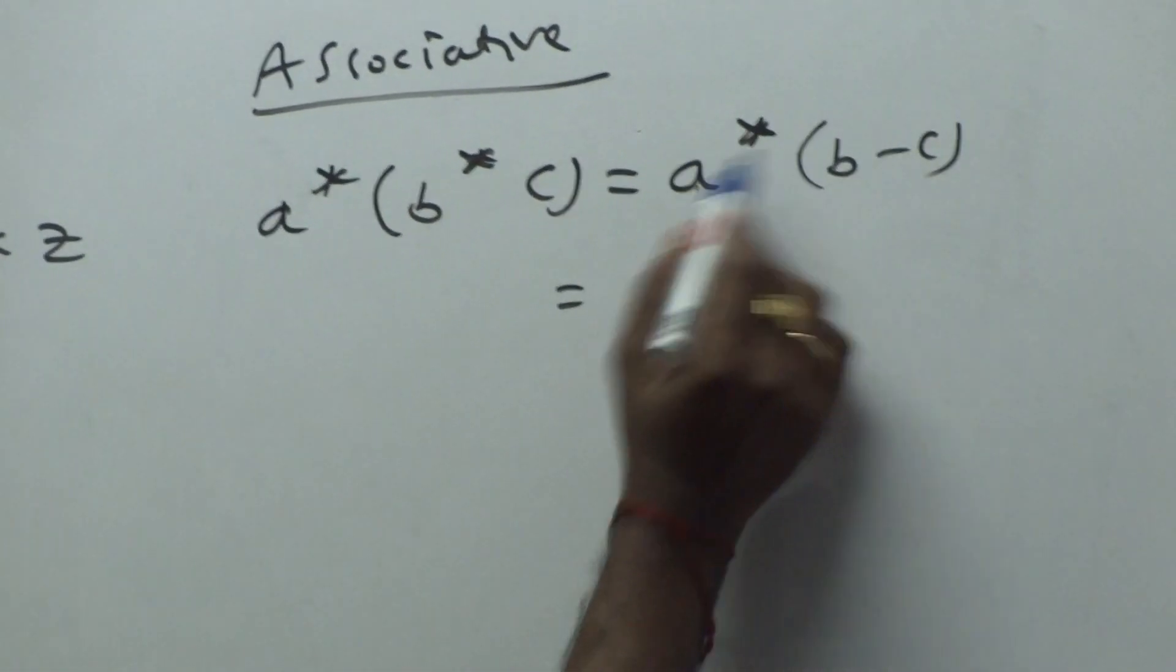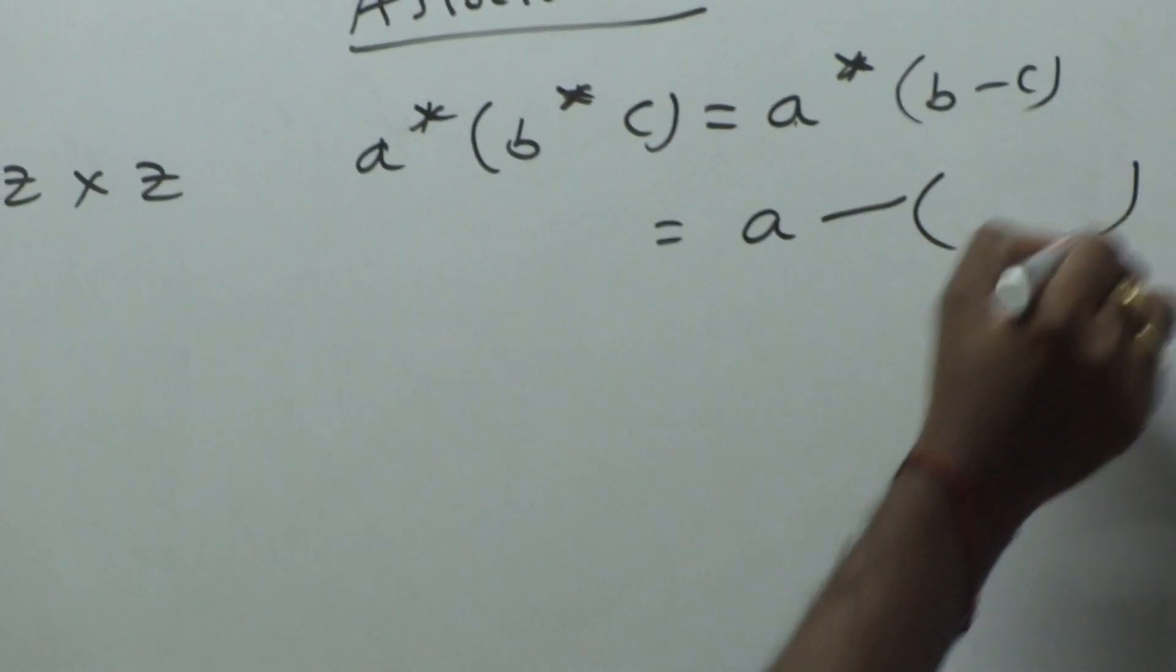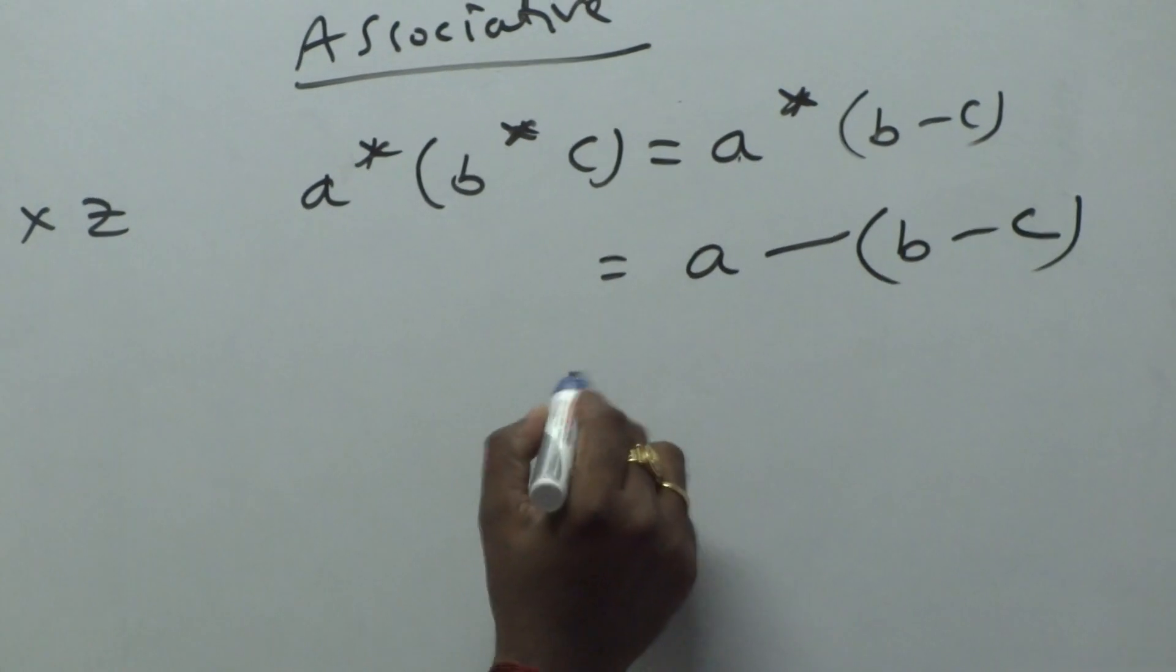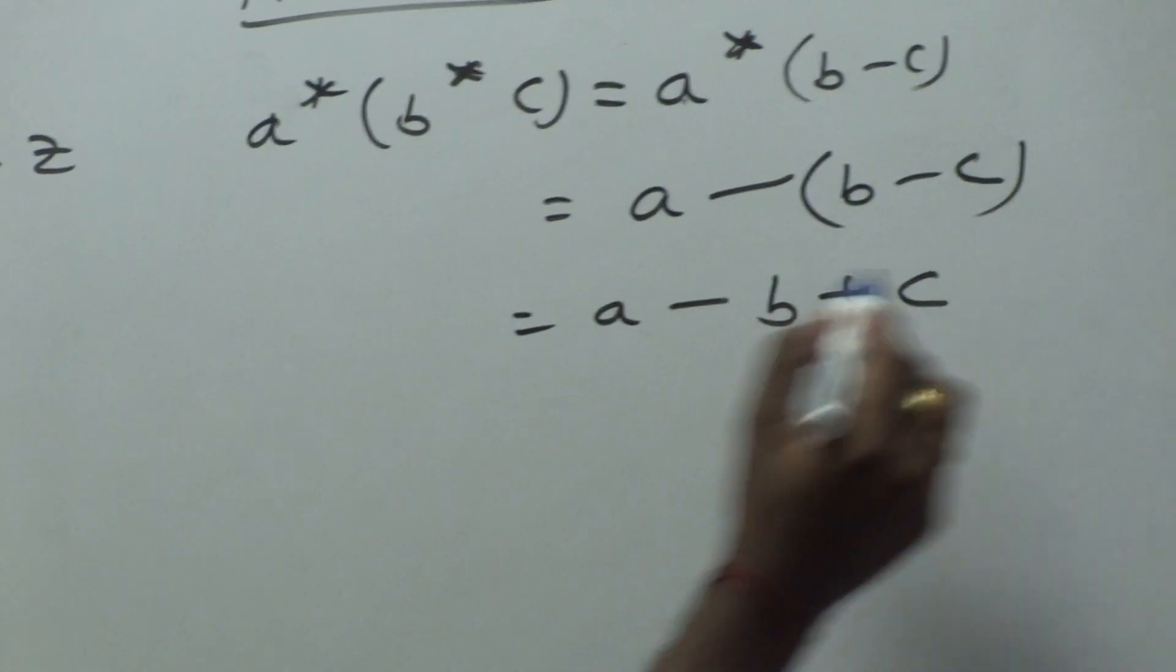What is A star B? A minus B. In place of B, what is there? B minus C. A minus B, minus or minus plus C.